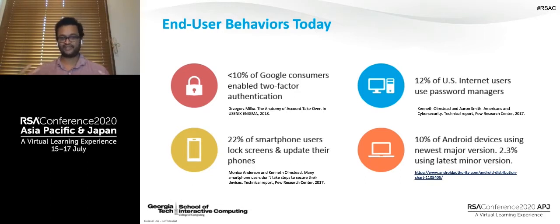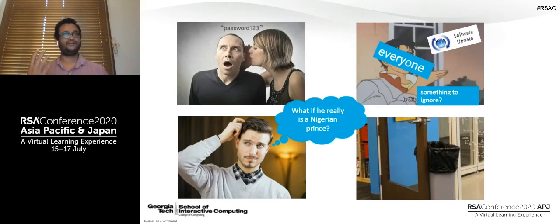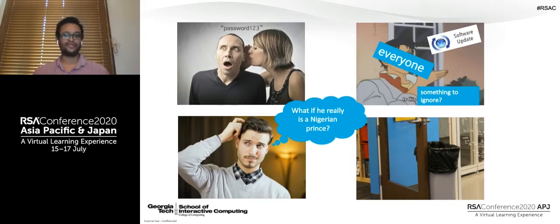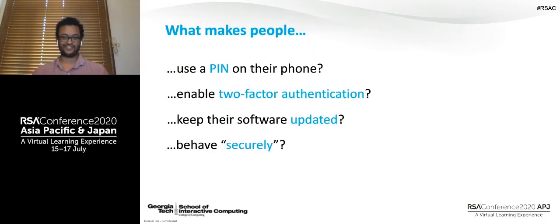When we think about end user security and privacy behaviors, we're confronted with more sobering statistics. Fewer than 10% of Google consumers enable two-factor authentication. Only about 12% of US internet users use password managers, and approximately only 22% of smartphone users lock their screens and keep their phones completely up to date. Android suggests as of May 2019 that only 2.3% of their users use the latest minor version of the Android operating system. This speaks to a disconnect between how experts want people to use secure systems and how end users actually use those systems.